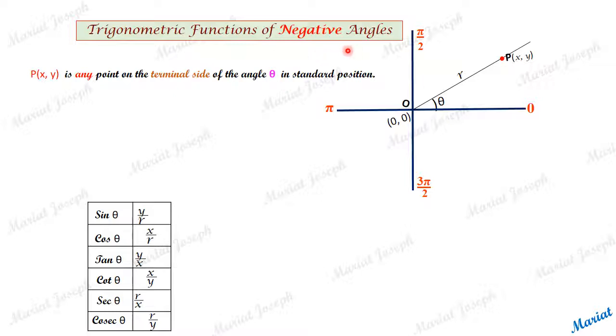Trigonometric functions of negative angles. Trigonometric functions are defined on the basis of coordinates of a point on the terminal side of the angle drawn in standard position.